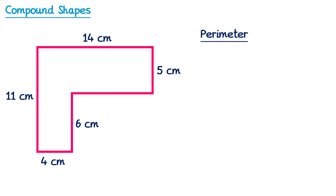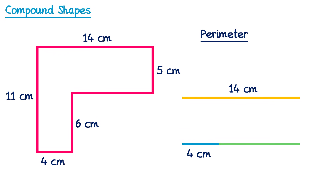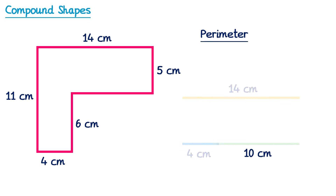Now let's find the length of the other missing side. This side is horizontal, so we'll compare it with the other horizontal sides on the shape. We have 14 at the top and 4 at the bottom. If we imagine moving the 4 centimeters up so it lines up with the green side, the total length of the blue and green sides must equal the orange side. So we do 14 subtract 4, which is 10. The length of that green side is 10 centimeters.